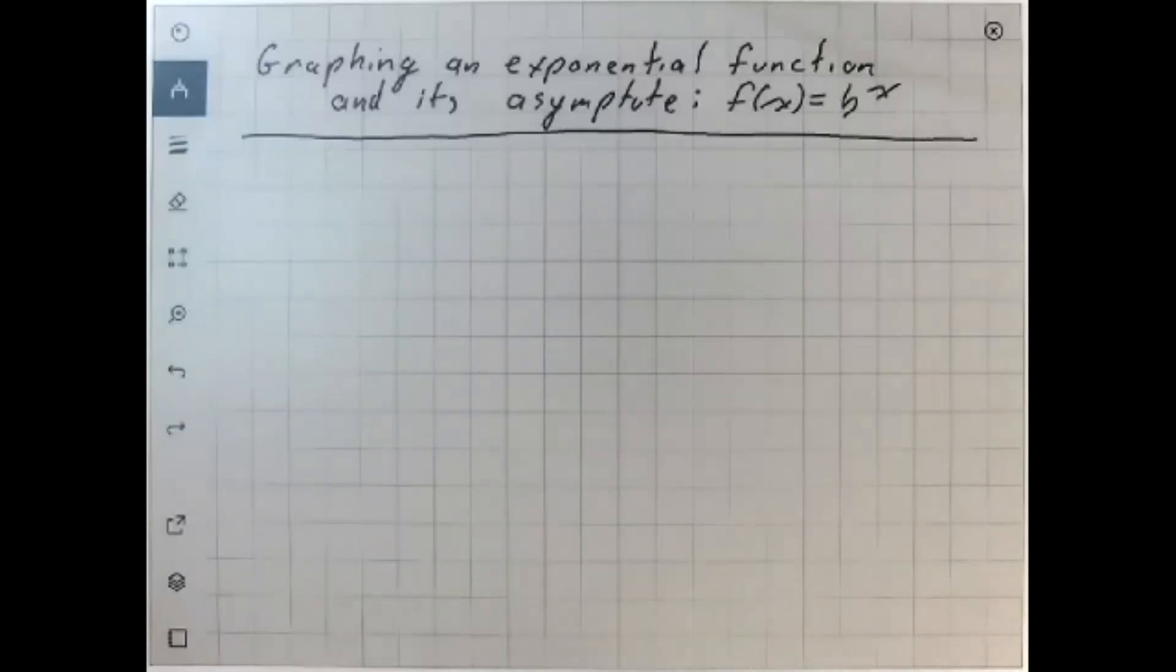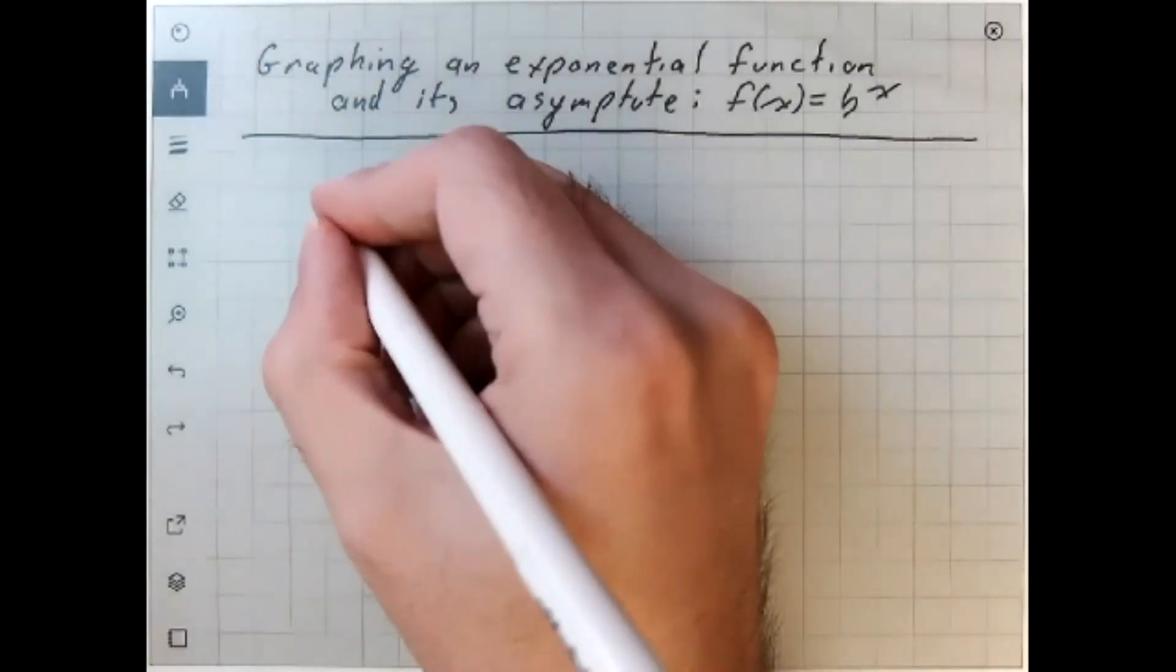Graphing an exponential function and its asymptote, f of x equals b to the x. In order to make sense of what's going on here, let's first look at a specific example.